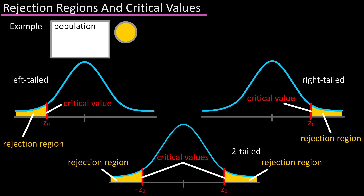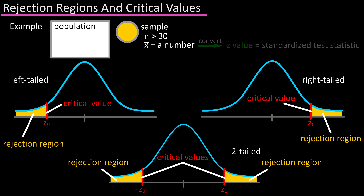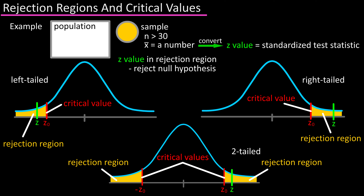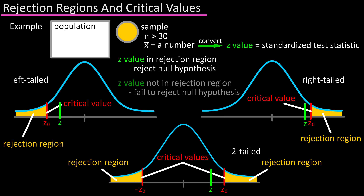If you have a random sample with a sample size greater than 30 from a population, and from this sample you calculate a sample mean x-bar, and you found a standardized test statistic — the green line, often noted as z — whose value fell in a shaded area, you would reject the null hypothesis. If it did not fall in a shaded area, you would fail to reject the null hypothesis.